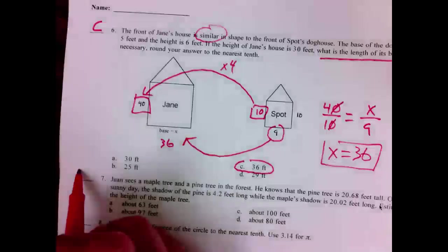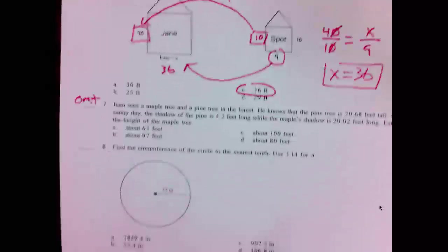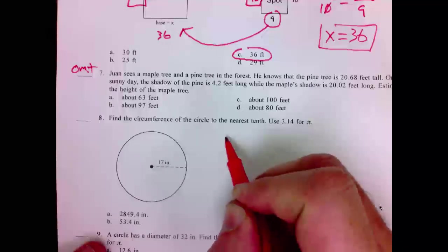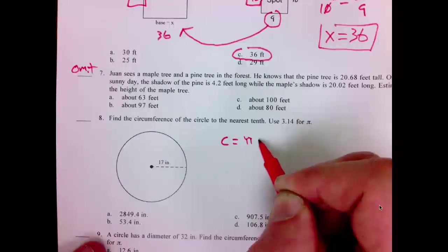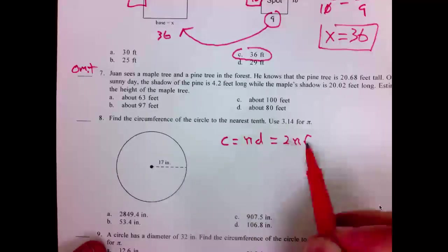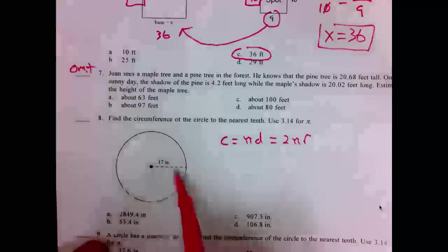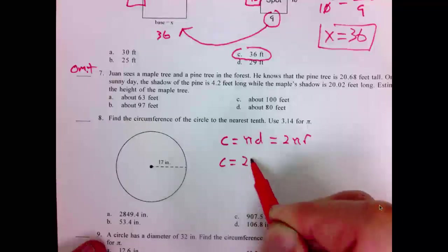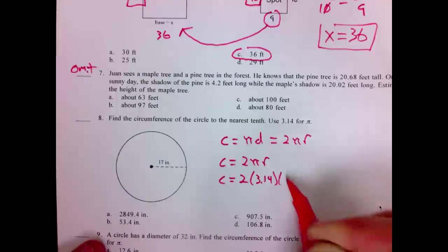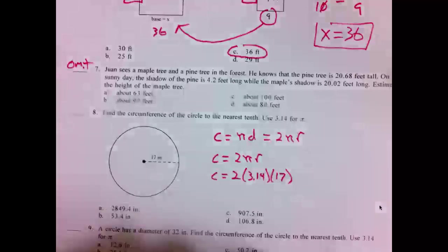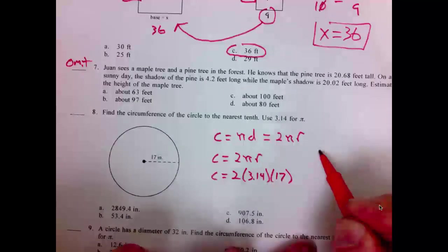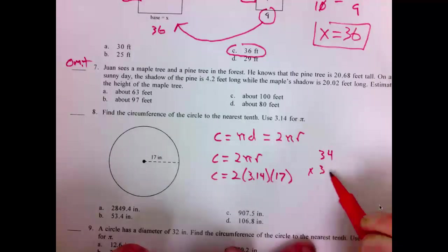Number 7, we omitted. Number 8. It says, find the circumference of the circle to the nearest tenth. We have the formula, circumference is equal to pi times the diameter, or also 2 pi times radius. Because we know that the diameter is 2 radius. We see these two formulas are really the same. In this case, they're giving us the radius. So, circumference equals 2 pi r. Circumference equals 2 pi is 3.14 and my radius is 17. I want 2 times 3.14 times 17. Multiplying 2 times 17, we get 34. So, here we have 34 times 3.14.